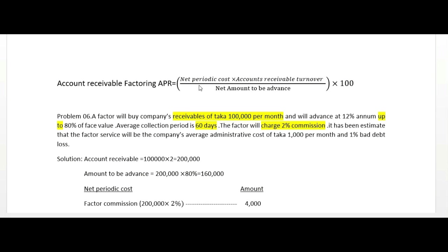The factor will charge 2 percent commission. It has been estimated that the factor service will save the company's average administrative cost of 1,000 per month and 1 percent bad debt. We need to find net periodic cost, account receivable turnover, and net amount to be advanced.